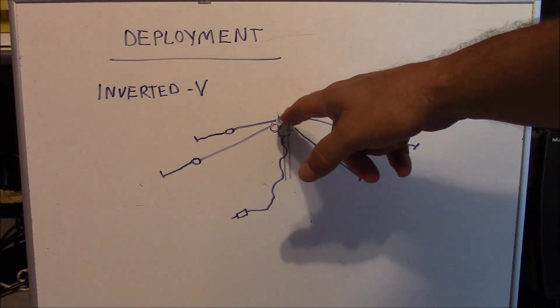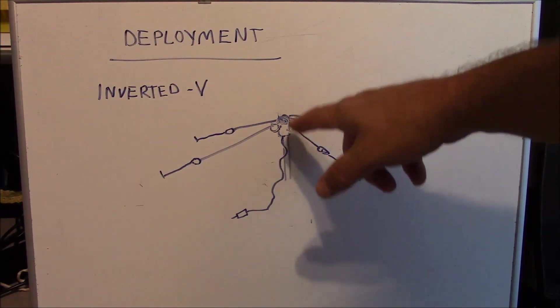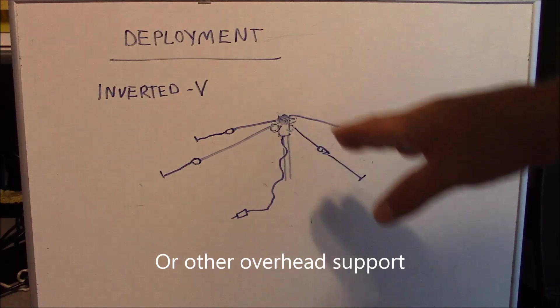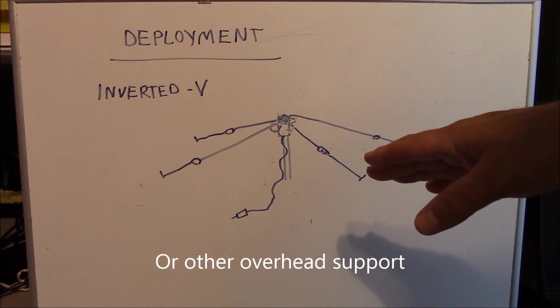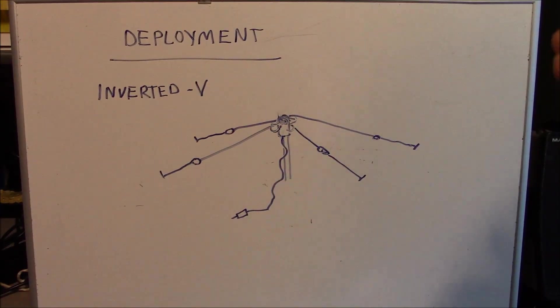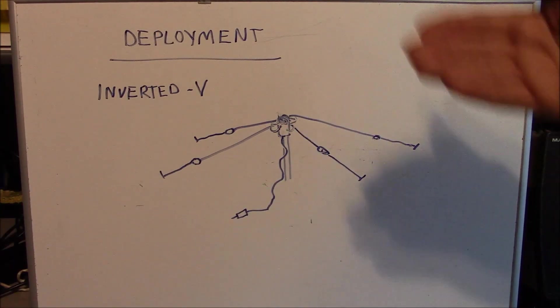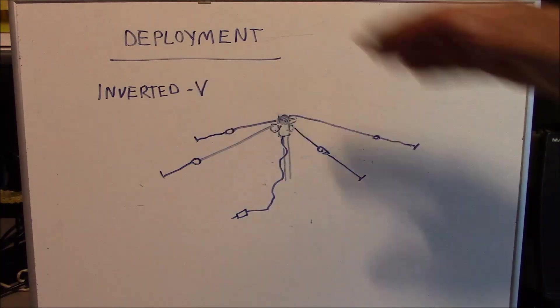And it almost acts as a guy system for the antenna itself to allow it to be able to handle winds. Now you could certainly take the antenna and delete the mast and place this on a branch as long as you have room to set the antenna up in that way. And that'll work fine. But typically NVIS antennas exhibit better performance when they're set up in the clear and they don't have any overhead foliage.